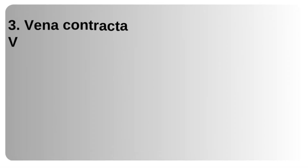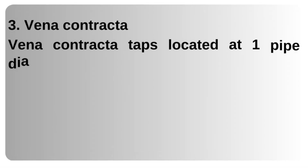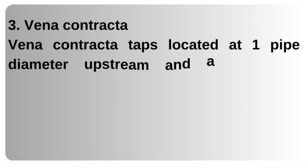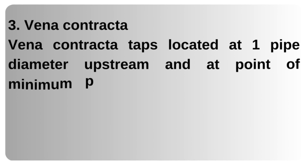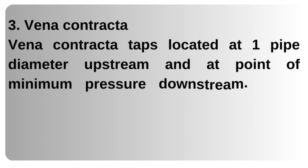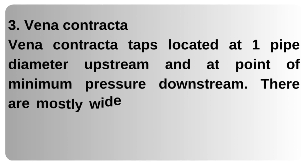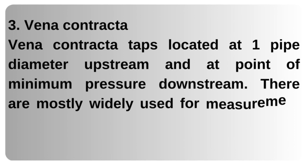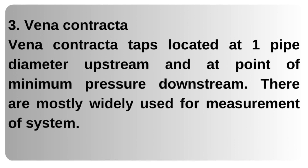3. Vena contracta taps — located at one pipe diameter upstream and at the point of minimum pressure downstream. They are most widely used for measurement of flow in systems.